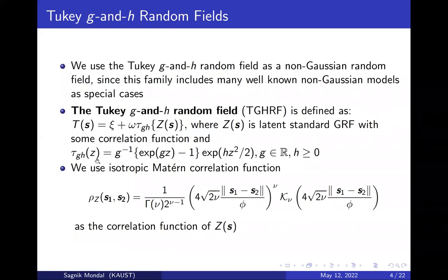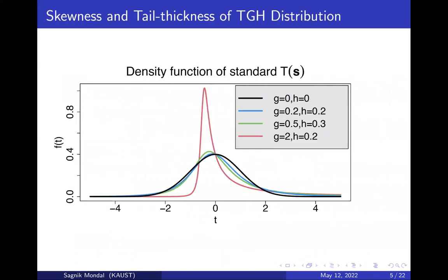The transformation tau_GH of Z, given by this equation, introduces skewness and tail thickness on the Gaussian distribution via two parameters G and H respectively, where G can be any value on the real line and H must be greater than or equal to 0. The density functions of T(S) are plotted for different combinations of G and H. When G and H are both 0, we get the Gaussian distribution; as G increases, we get more skewness; and as H increases, we get more tail thickness.